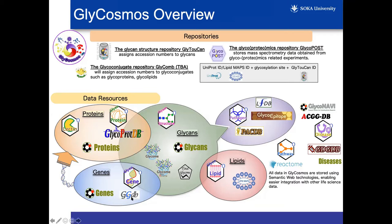We have glycans in the center here, but these are synthesized by various genes — we call them glycogenes — which are translated into proteins. These proteins may be lectins or glycoproteins. They could be glycosylated, but they can also be proteins that bind to glycans. There are also glycolipids and various diseases and pathways that we attribute to glycans. We try to encapsulate all this information through a single portal.